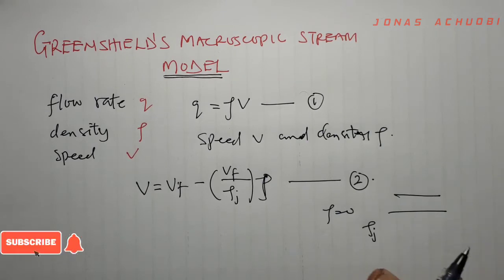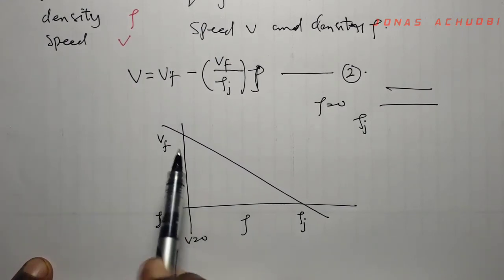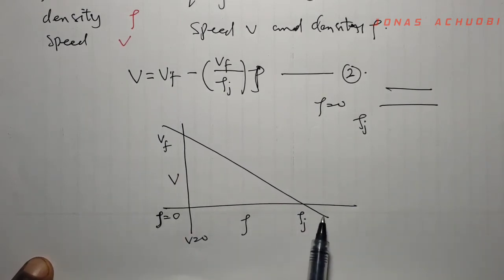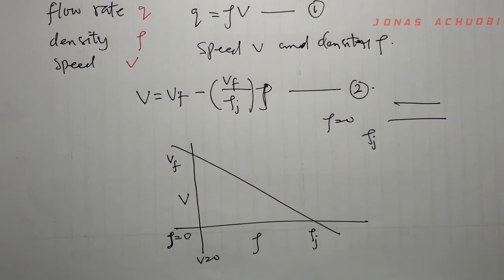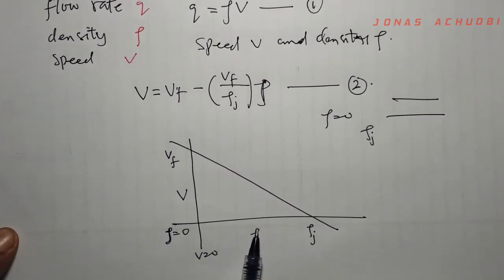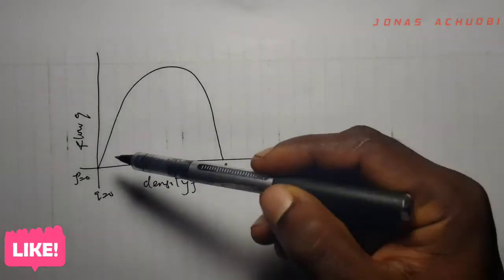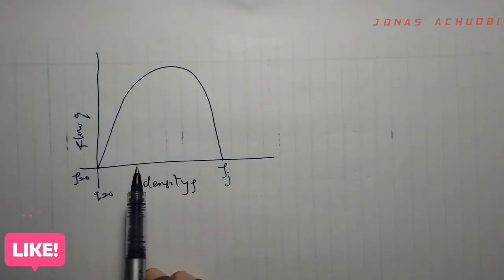This linear relationship can be visualized on a graph: when density is zero, the free flow speed is attained, and where speed is zero, the jam density is achieved. This is the linear speed-density relationship of the Greenshield model. Once the speed-density relation is established, the flow-density relation can also be established, and that relationship is vertically downward parabolic in shape.